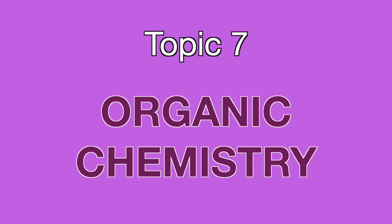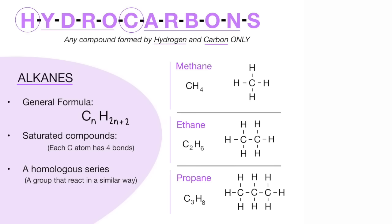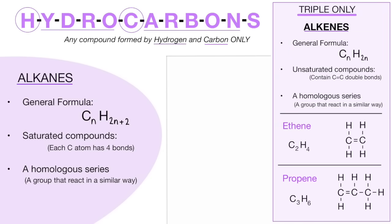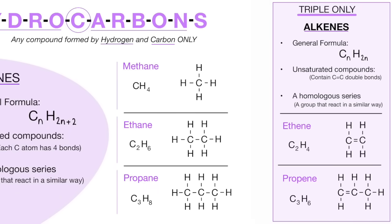That is the end of topic 6. Moving on to topic 7, which is organic chemistry. Organic chemistry requires the knowledge of hydrocarbons. Within hydrocarbons, you need to know about alkanes, and for triple students, alkenes. There is a general formula, and typically you need to know the first few alkanes and alkenes.